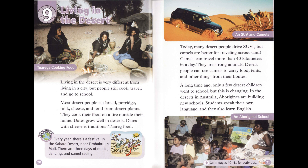Chapter 9: Living in the Desert. Living in the desert is very different from living in a city, but people still cook, travel, and go to school. Most desert people eat bread, porridge, milk, cheese, and food from desert plants, and cook on a fire outside their home. Dates grow well in deserts — dates with cheese is traditional Tuareg food. Discover: Every year there's a festival in the Sahara Desert near Timbuktu in Mali, with three days of music, dancing, and camel racing.